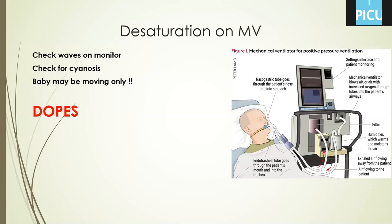If you have desaturation now, the first step is to remove the connection and connect the AMBU bag to the ETT. Do AMBU bagging. If the patient improves on mild pressure, the problem may be in the ventilator or connections — check connections and reconnect to the ventilator. You may do recalibration or even change the machine. If you are doing AMBU bagging and saturation is still not improving, try suction — the ETT may be obstructed by secretions or a blood clot. If that is the cause, saturation will improve.